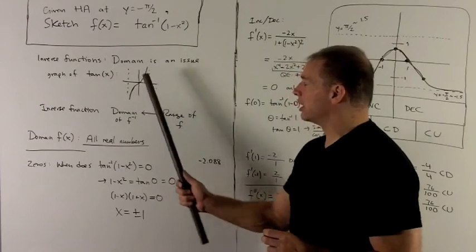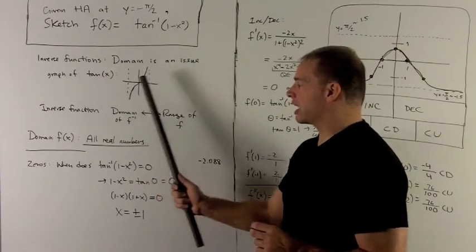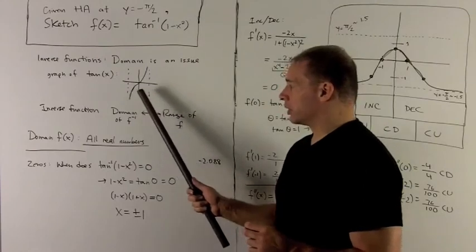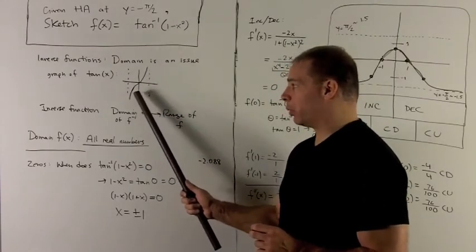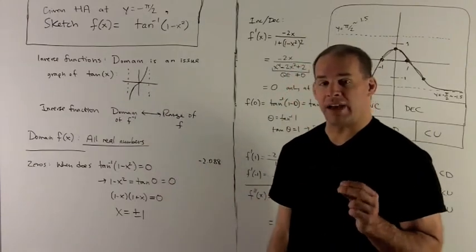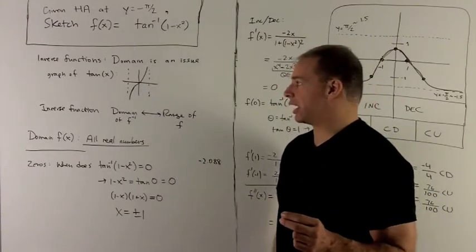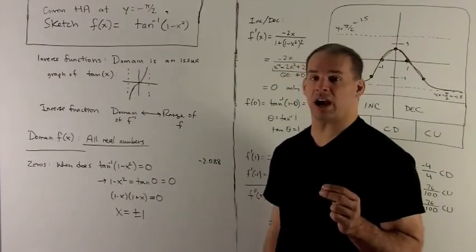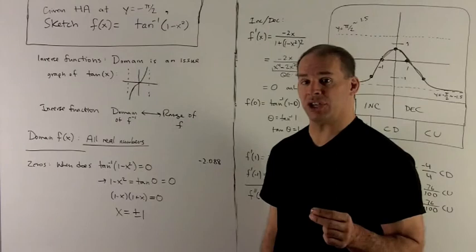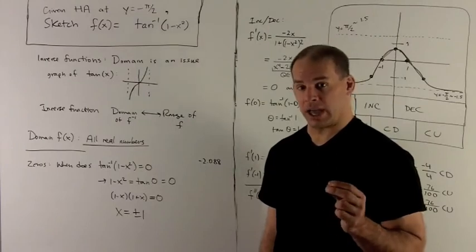If I look at the range of tangent, tangent looks like this. Its range is going to be anything that gets cut by a horizontal line. For every point on the y-axis, we're going to have a point that goes with tangent. The range of f is going to be everything. Range of tangent is the entire real line. That means the domain of inverse tangent is the entire x-axis.